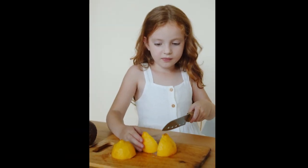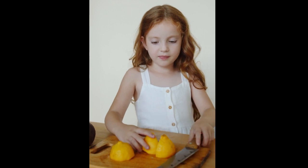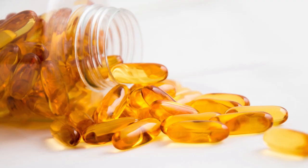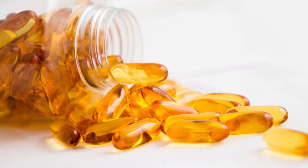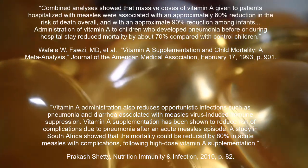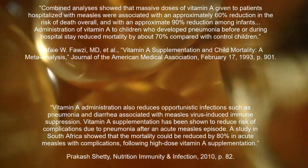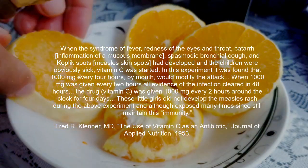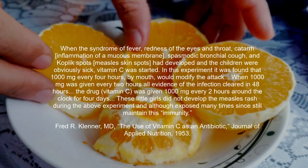Dr. Ellison reported in 1932 that well-nourished children rarely died or had serious complications from measles. In the 1930s, scientists found that mortality dropped by 58% when children hospitalized with measles were given cod liver oil, which contains vitamin A, vitamin D, and omega-3 fatty acids. Many studies in the medical literature show how correcting for vitamin A deficiency cuts measles deaths by as much as 60 to 90%. In 1953, Dr. Klinner also showed that vitamin C was effective against measles.